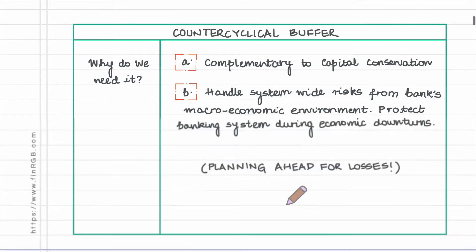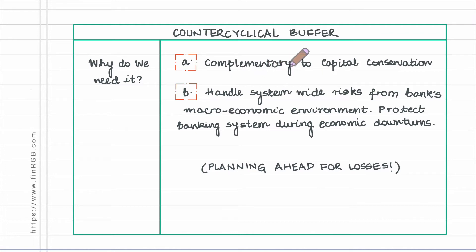Now let us talk about the second type of buffer, which is the counter cyclical buffer. This buffer is meant to be complementary to the capital conservation buffer.